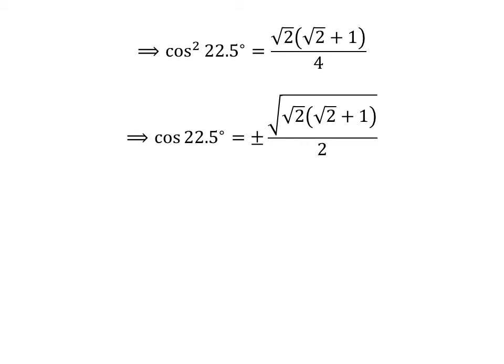Taking square root of the whole expression gives us cosine of 22.5 degrees is equal to plus minus square root of square root of 2 times square root of 2 plus 1, upon 2.